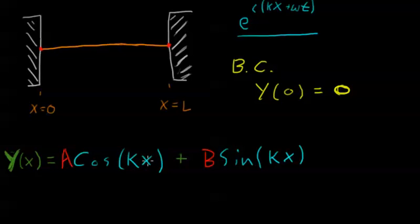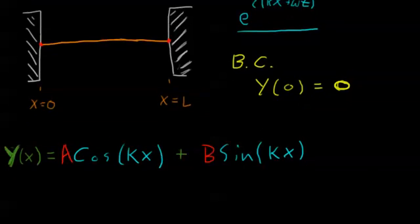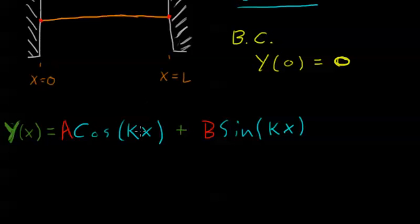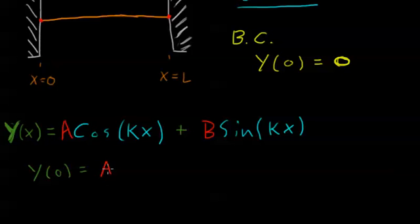Y of 0 is 0, so let's plug in that first boundary condition with x equals 0. Sine of 0 is 0, so that term goes away and we get no information about b. But cosine of 0 is 1, so we get y equals a. So y of 0 equals a. But since y of 0 has to equal 0, that means a equals 0, so we can forget about the cosine term entirely.